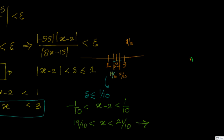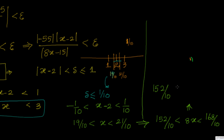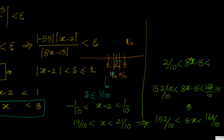Now we are interested in converting the expression for 8x - 15. We multiply through by 8: 152/10 < 8x < 168/10. Then subtracting 15, we get 2/10 < 8x - 15 < 18/10. This can be written as 1/5 < 8x - 15 < 9/5.